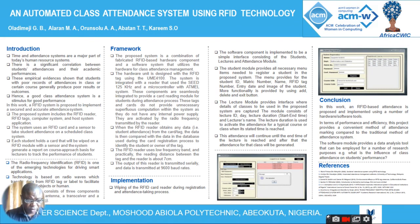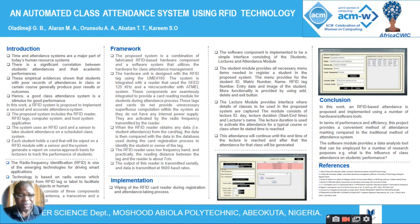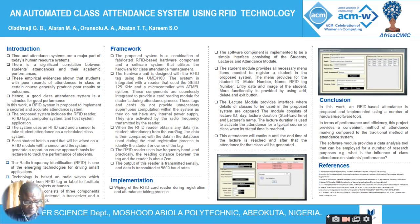Time and attendance systems are a major part of today's human resources management, and the same is applicable in training and academic environments. There is a significant correlation between student attendance and academic performance. Empirical evidence shows that students with poor attendance records generally produce poor results, so a good attendance system is a stimulus for good performance. These are the reasons behind the design of this automated attendance system.